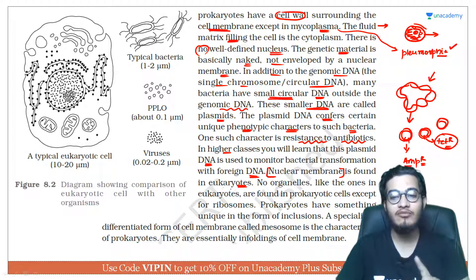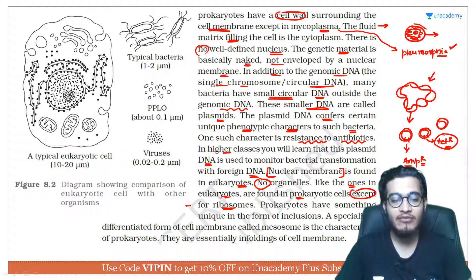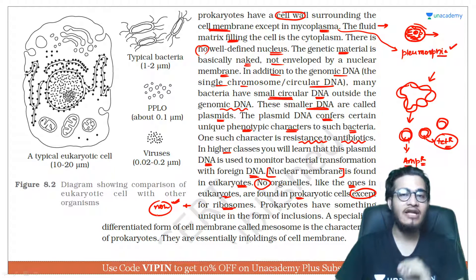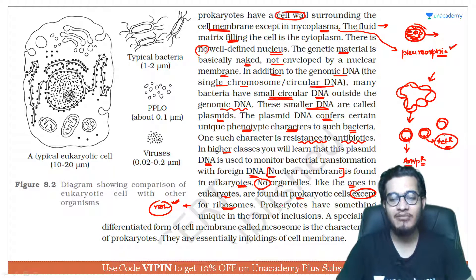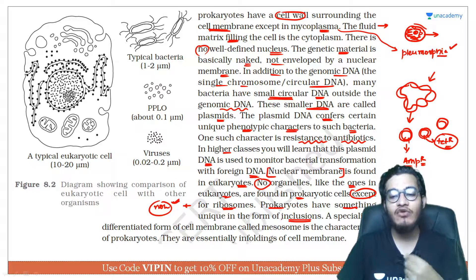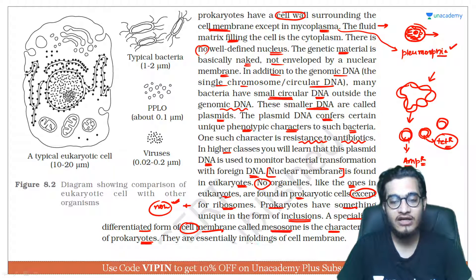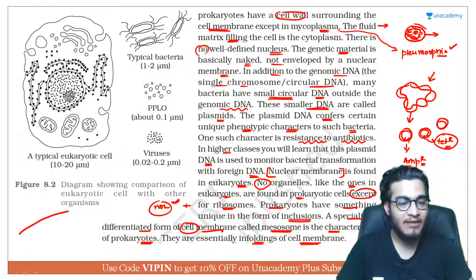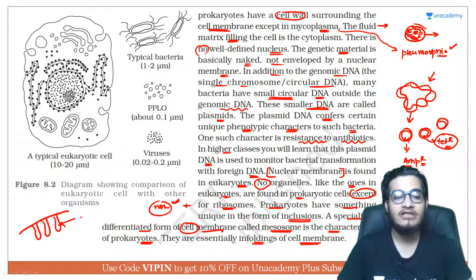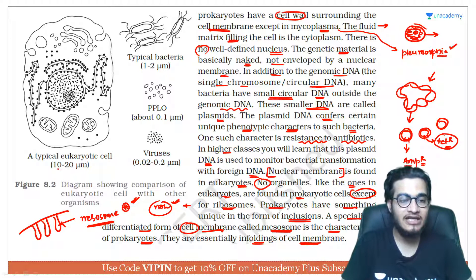Nuclear membrane is found in eukaryotes, which is why they have a well-defined nucleus; prokaryotes do not. No membrane-bound organelles like those found in eukaryotes are present in prokaryotes, except for ribosomes — because ribosomes are non-membrane-bound organelles and help in protein synthesis. Prokaryotes have something unique in the form of inclusions: the membrane creates infoldings, giving rise to a specialized structure called the mesosome, which is a characteristic feature of prokaryotes. We will study mesosome in detail in the next lecture.